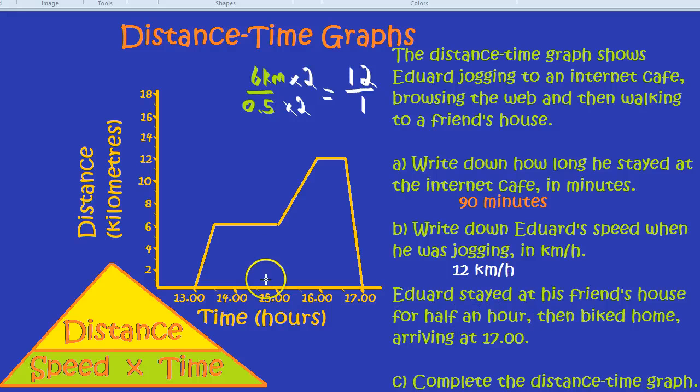If you were asked something like, how far has he travelled in total? We could simply say, 12 kilometers going there and 12 kilometers coming back. So, 24 kilometers in total. But in all of these questions, what was incredibly useful was knowing this triangle. The speed distance time triangle. And I would recommend finding a way to memorize that. Some students like this one. Don't stop trying. DST, distance, speed, time. Don't stop trying. Speed equals distance divided by time.